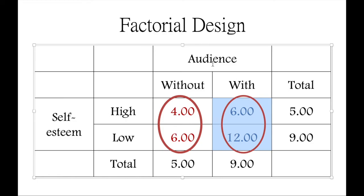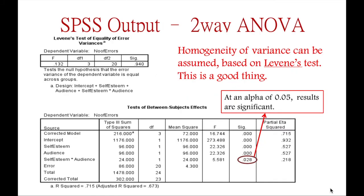There would be an interaction if it is revealed that the scores of 4 and 6 — for high and low self-esteem without audience — are not statistically different, whereas the scores of 6 and 12 — for high and low self-esteem with audience — are statistically different. The impact of self-esteem on the number of committed errors differed depending on the audience condition. We look at the interaction term in our ANOVA output, and if the p-value is less than alpha, that indicates moderation.